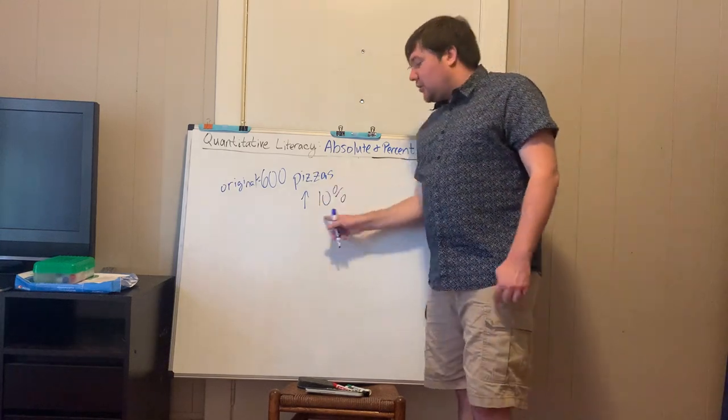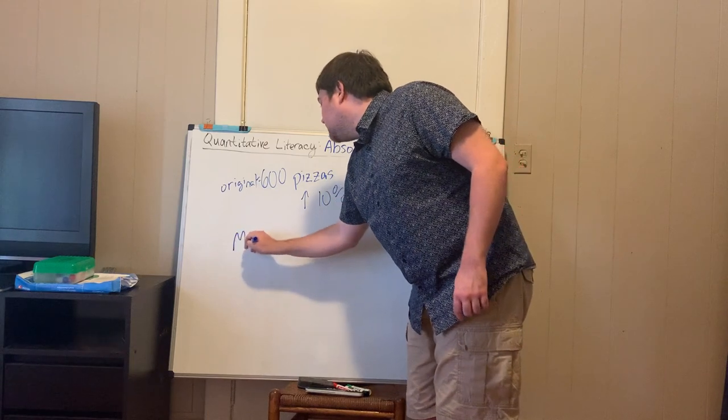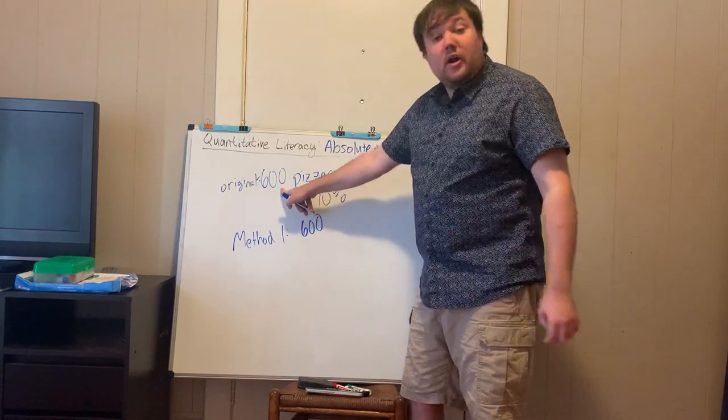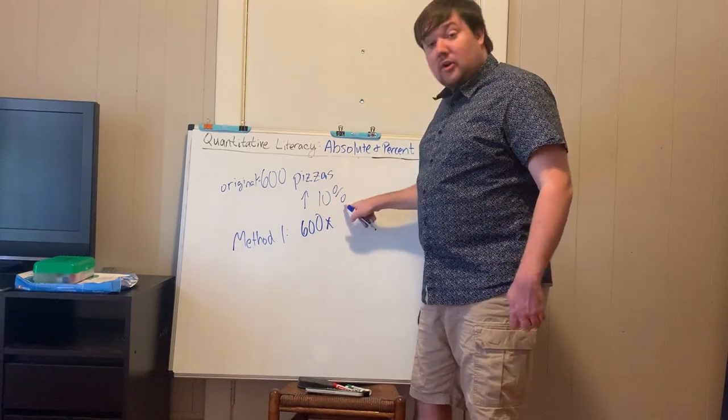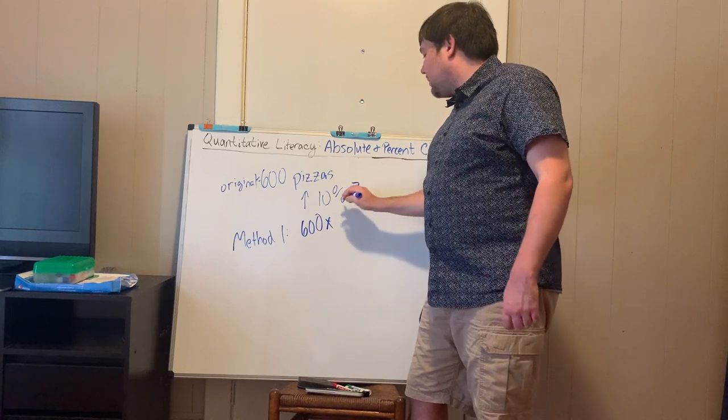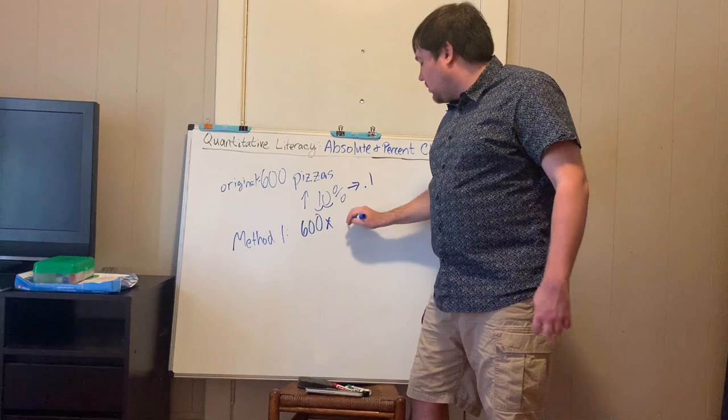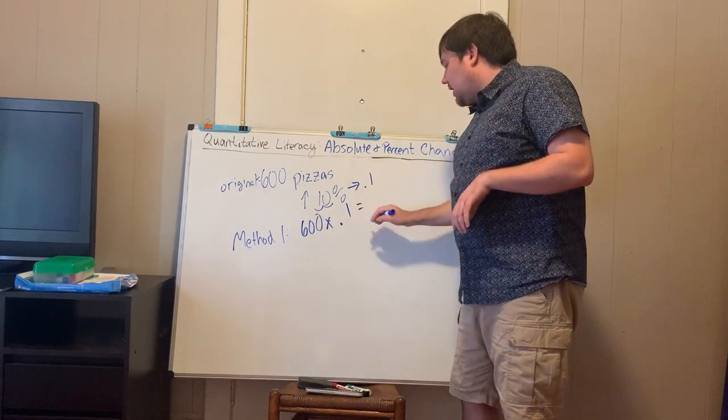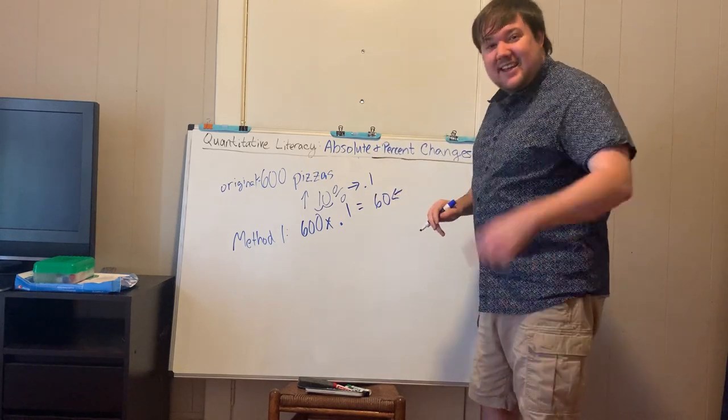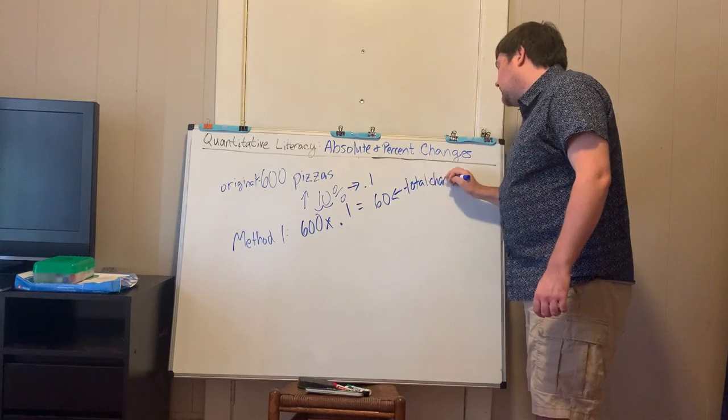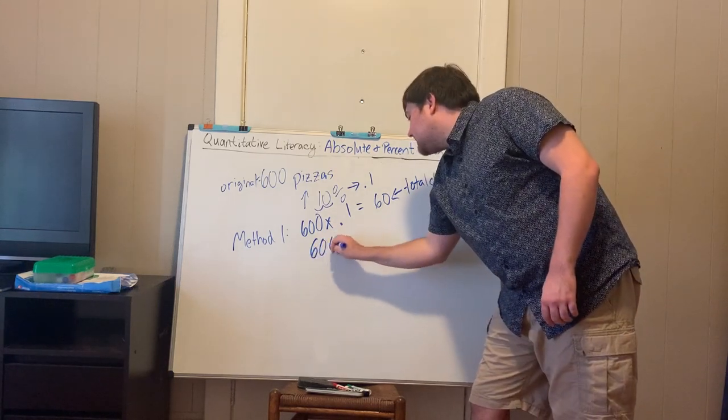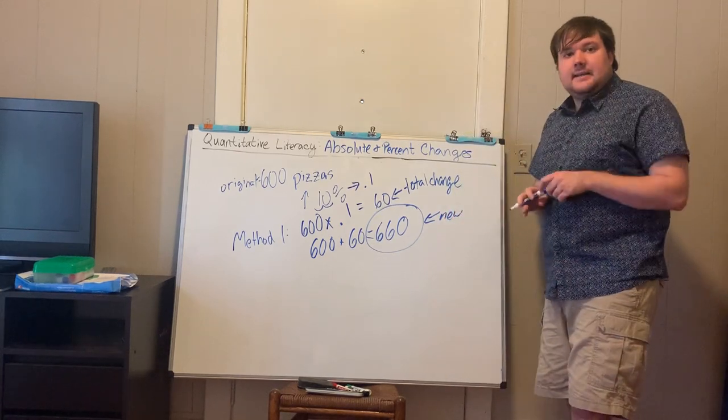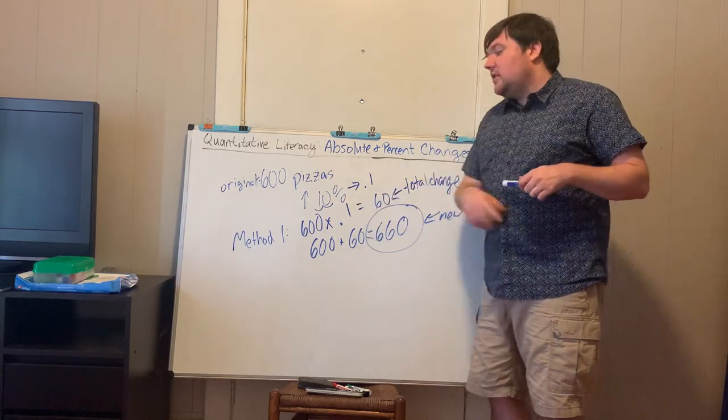So if we increase by 10%, what we could do, so for method one, is figure out how many pizzas that's actually going to increase our number by. So we take our value, and we multiply it by our percent as a decimal. In this case, remember 10%, we move the decimal over, that'd be 0.1. 0.1 in this context is referred to as our growth rate. And in this case, that is 60. This is our total change. And then in this case, we can just take the 600 and add on the 60 to get that our new value is 660 pizzas.